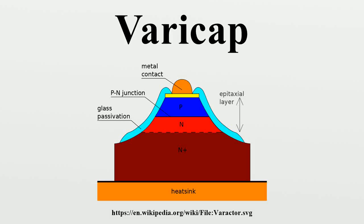In electronics, a varicap diode, varactor diode, variable capacitance diode, variable reactance diode, or tuning diode is a type of diode designed to exploit the voltage-dependent capacitance of a reversed biased p-n junction.